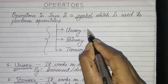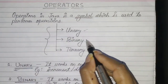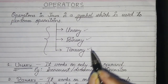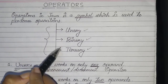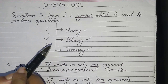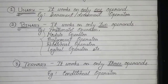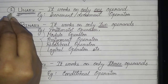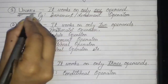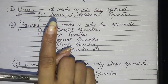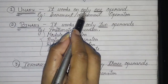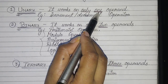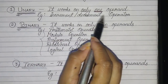The first category is unary, the second one is binary, and the third one is ternary. Now coming to the definition of unary operator — unary stands for one, meaning it works on only one operand, not more than one. Increment and decrement operator is one example of a unary operator.